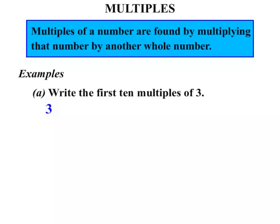3 is our first multiple of 3. 3 times 1 is 3. Then 3 times 2 is 6. That's our next one. The next one is 9. So we are going up by 3's. Then 12, 15, 18, 21, 24, 27 and 30. That's the 10th multiple of 3.